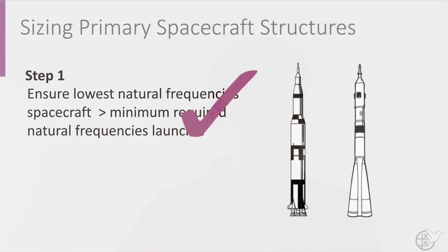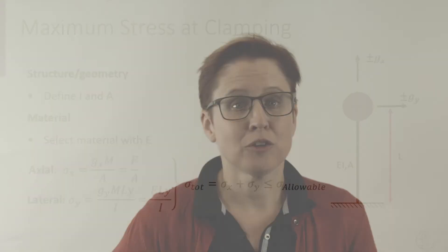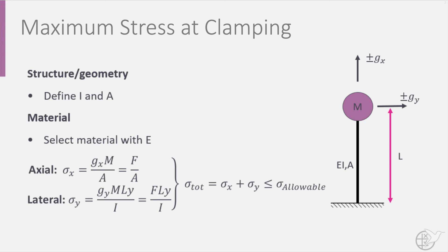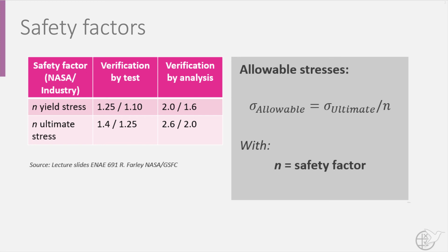Based on the minimum natural frequency, determine values for the cross section A and the moment of inertia I, then select a material with modulus of elasticity E. Using the basic stress formula and the given minimum axial and lateral static loads Gx and Gy, determine the total stress. In order for the design to meet the maximum stress requirement, the stress found must be lower than the allowable stress. The allowable stress is defined as the ultimate stress divided by safety factor N. This safety factor depends on the type of verification and the launch organization or industry.